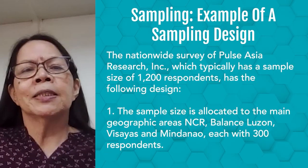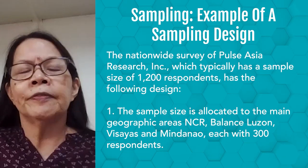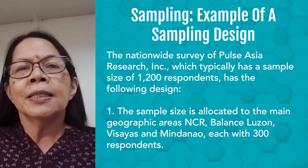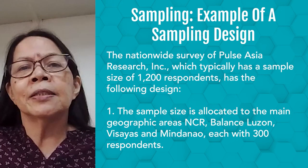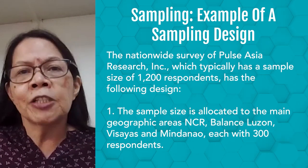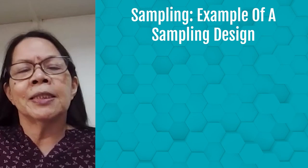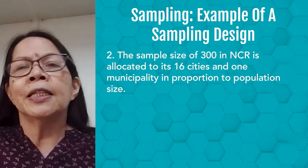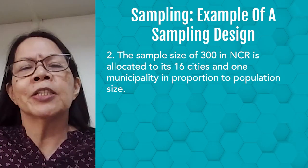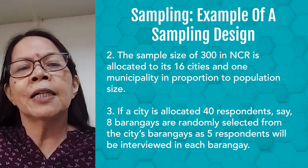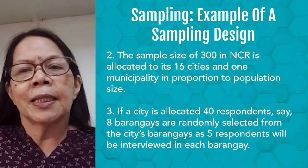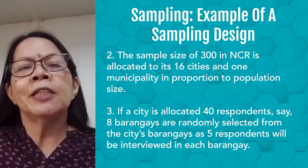To give an example of a sampling design, let me describe the nationwide survey of Pulse Asia, which typically has 1,200 adult respondents. The sample size of 1,200 is allocated equally to the four main geographic areas: NCR, Balance Luzon, Visayas, and Mindanao — so each area has 300 respondents. The sample size of 300 in NCR is allocated to its 16 cities and municipalities in proportion to population size. If a city is allocated 40 respondents, eight barangays are randomly selected from that city's barangays, as five respondents will be interviewed in each barangay.